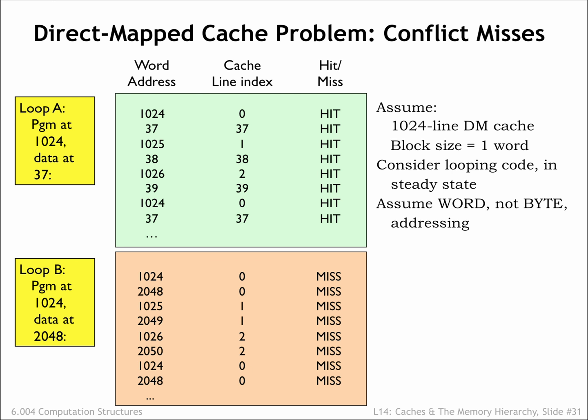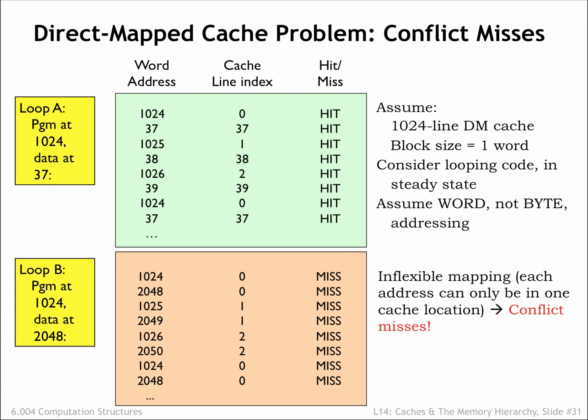Now consider the execution of the same program, but this time the data has been relocated to start at address W2048. Now the instructions and data are competing for use of the same cache lines. For example, the first instruction at address 1024 and the first data word at address 2048 both map to cache line 0, so only one of them can be in the cache at a time. So fetching the first instruction fills cache line 0 with the contents of location 1024, but then the first data access misses and refills cache line 0 with the contents of location 2048. The data address is said to conflict with the instruction address. The next time through the loop the first instruction will no longer be in the cache and its fetch will cause a cache miss, called a conflict miss.